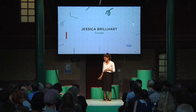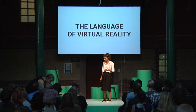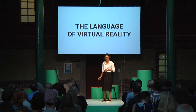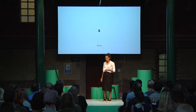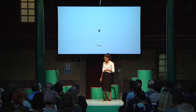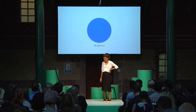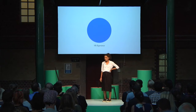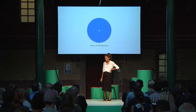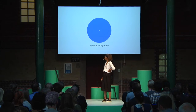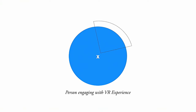Hello. So I'm going to start with some diagrams. This is a person. This is a VR experience. This is a person in a VR experience. This is a person engaging with a VR experience. I'm going to use these diagrams moving forward, so for clarity's sake I wanted you to get some context for that.